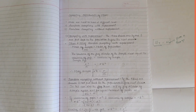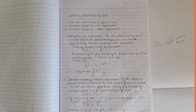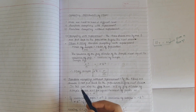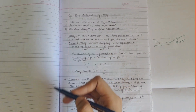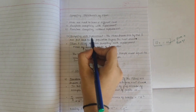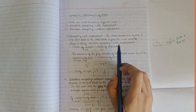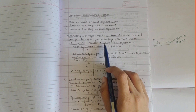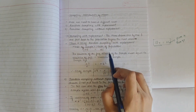In this video we'll be looking into the important topics and formulas to understand before solving questions on sampling distribution. There are two types of sampling: random sampling with replacement and without replacement. Let's deal with them one by one. For sampling with replacement, items are drawn one by one and are put back to the population before the next one is drawn.